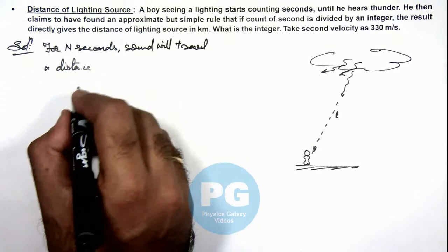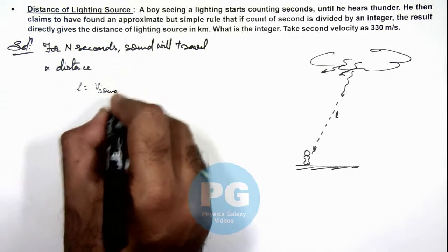Which can be given as L is velocity of sound multiplied by N.